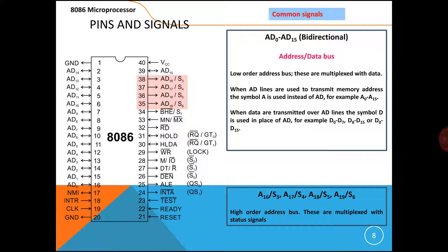The 8086 supports 20 address lines and 16 data lines. AD0 to AD15 complete the 16 data lines. A16 to A19 are the remaining address lines. S3 and S4 are status lines indicating which segment register is presently being accessed — for example, if S4 and S3 are 00, stack memory is used; 10 means code; 11 means data.